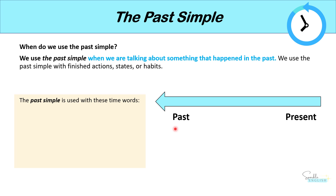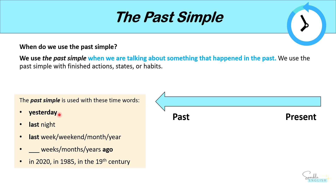The past simple is used with these time words: yesterday, last night, last week, last weekend, last month, last year, or you might specify a number of weeks, months, or years ago — so two weeks ago, five months ago, two years ago — or talking about something that happened in the past in 2020, in 1985, in the 19th century.